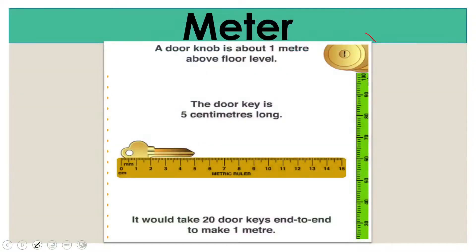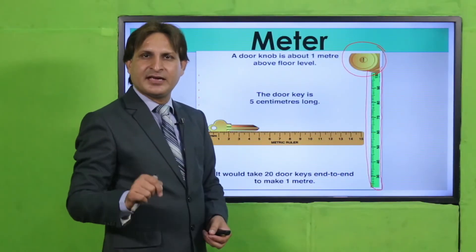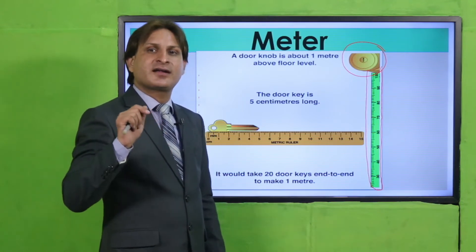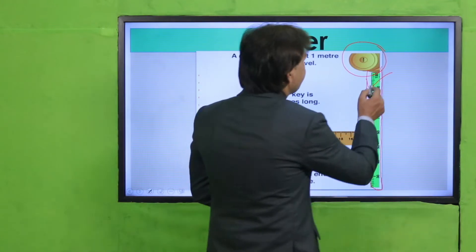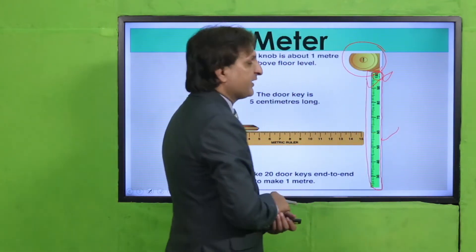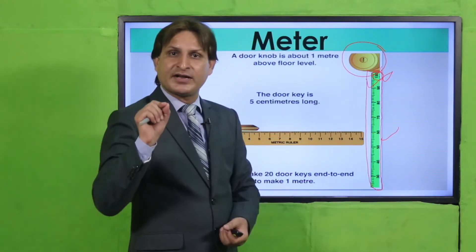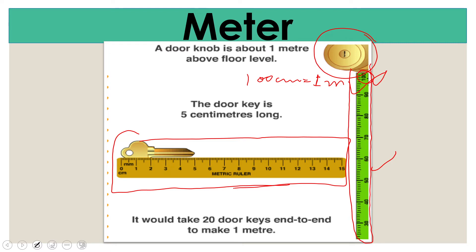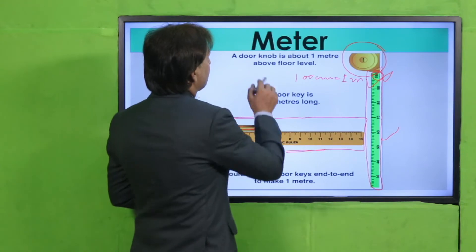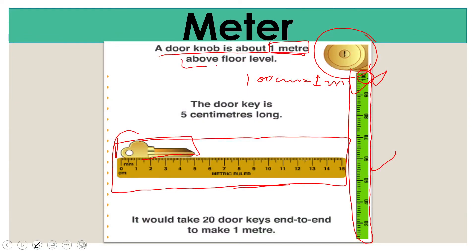Jaisa ke is sheet ke upar given hai, yeh measuring tape di hui hai. Isko hum kya use karte hain? Long lengths measure karne ke liye. Toh ek corner se lekar doosre corner tak, kisi bhi plot ki length measure karni ho toh uske liye hum yeh meter scale tape — measuring tape — use karte hain. Aur jaise hi 100 ke upar pahunchenge, toh aapke paas one meter ke equal hoga — 100 cm. So 100 cm is equal to 1 meter. Aapke meter scale ke upar centimeters aur meters dono likhe hote hain.